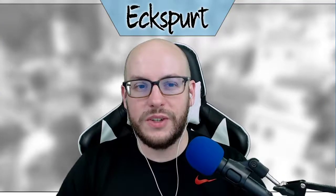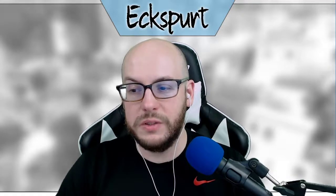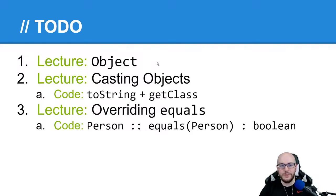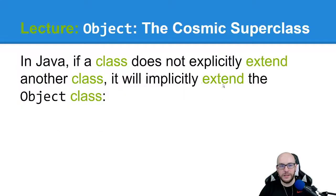All right, we're back. This unit's all about inheritance. In our last video, we learned about polymorphism, which is going to tie into what we're talking about today. We're going to talk about the Object class that exists in Java, and then we'll get into casting objects. We've seen casting before dealing mostly with ints and doubles, but now with polymorphism, casting becomes something we need to talk about. We're also going to start overriding the equals method.